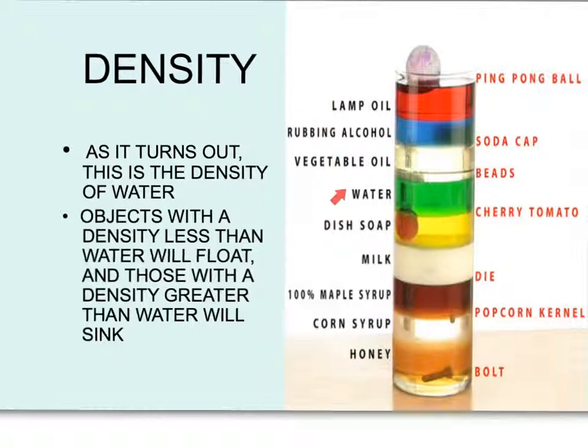Now we know the density of water is 1, so vegetable oil, rubbing oil, and lamp oil have a density less than 1, where everything below water has a density greater than 1.